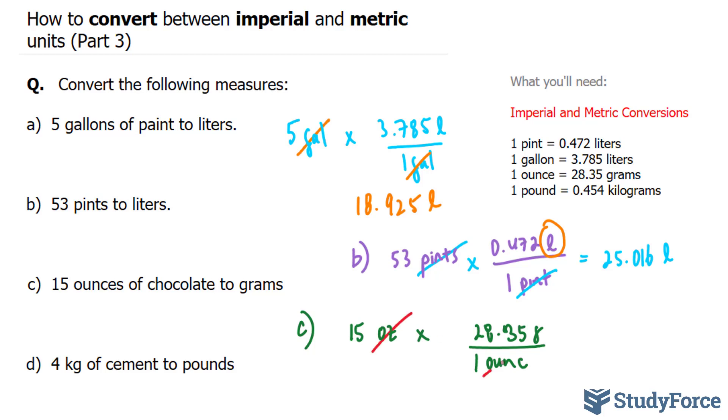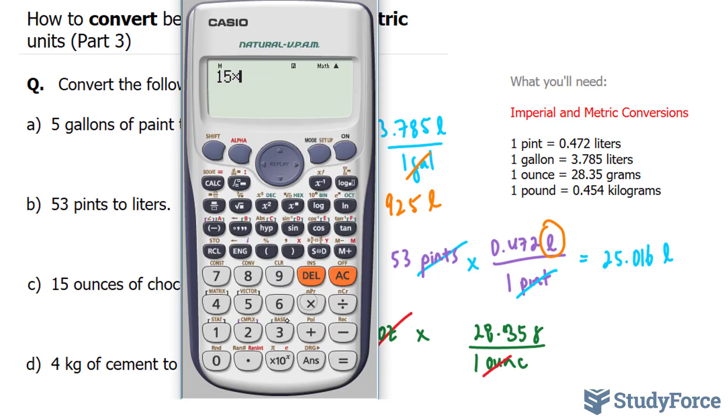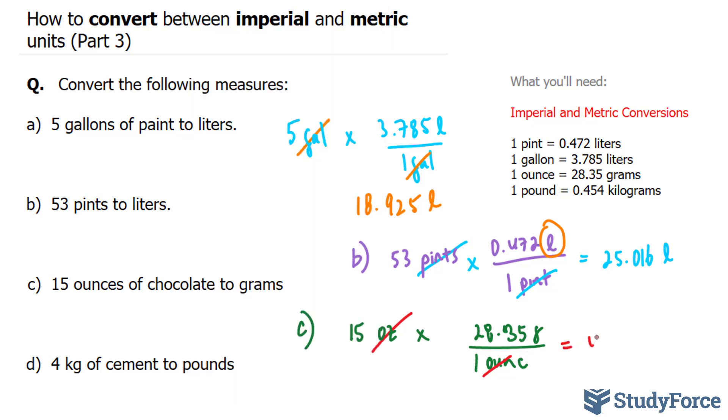So canceling the ounces, I end up with 15 times 28.35, and that gets me 425.25, 425.25 grams.